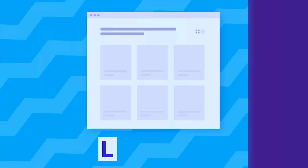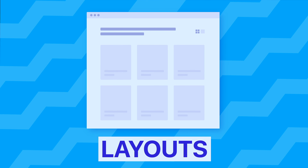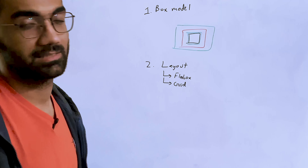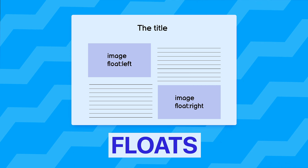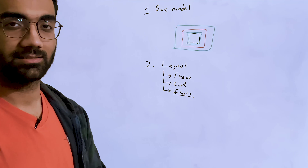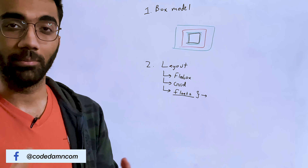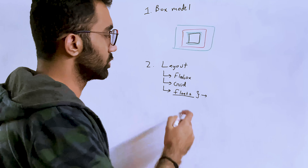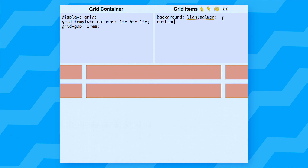Once you understand box model basics, I'd recommend learning layouts in CSS — at least flexbox and grid. If you want to really solidify your understanding, also look at floats, though floats have a lot of use cases beyond layouts, including some hacky ways, so consider those when you're more intermediate with CSS. Understand how clear works, how floats on pseudo-elements work, but for now flexbox and grid are your best friends for complex layouts.